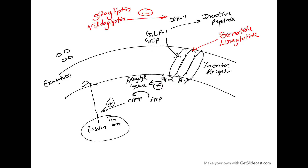Now let us see the elaborate mechanism. Consider a beta cell with incretin receptors. Whenever a GIP or GLP-1 molecule acts on these incretin receptors, which are G protein-coupled receptors, it activates the adenylyl cyclase enzyme, which converts ATP into cyclic AMP. Cyclic AMP then stimulates insulin exocytosis. So GLP-1 or GIP causes insulin exocytosis.